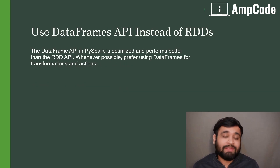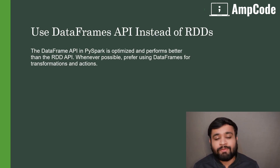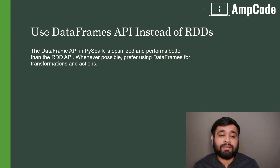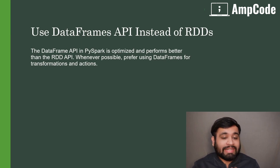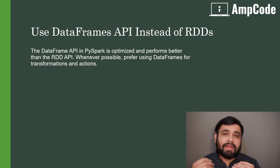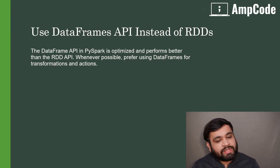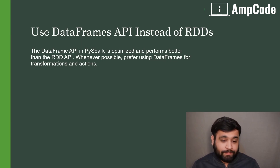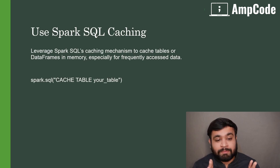A very important technique is to use the DataFrame API instead of RDDs. You may ask — RDDs are the core API of Apache Spark — but things have changed. Due to the Catalyst Optimizer, every Spark application written using DataFrames is much faster compared to RDDs. The DataFrame API in PySpark is highly optimized and performs better than the RDD API in many scenarios. If you are handling structured data, you should prefer using DataFrames for your transformations and actions.